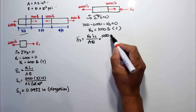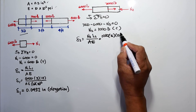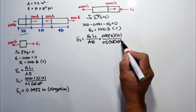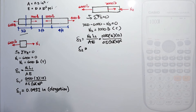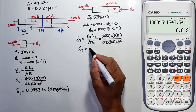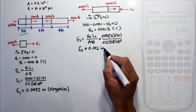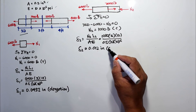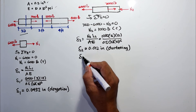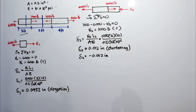Delta 2 equals N sub 2 times L sub 2 divided by area times modulus of elasticity. That is one thousand times five feet converted to inches, divided by 0.5 divided by 10 times 10 to the 6. Delta 2 equals 0.012 inch. Since this is compression, the deformation is shortening, so delta 2 is negative.